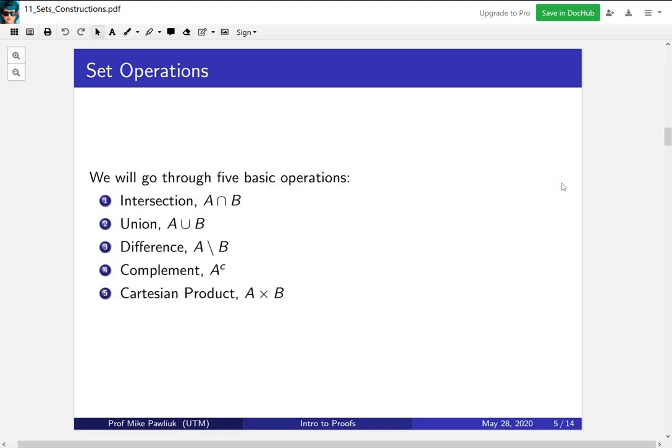Now the bulk of this video is to go through these five operations for constructing new sets: intersections, union, difference, complement, and Cartesian product. At first these all sort of look like new symbols that are hard to understand, but we'll try to relate them to things we already know.